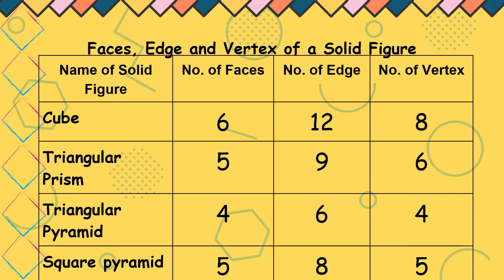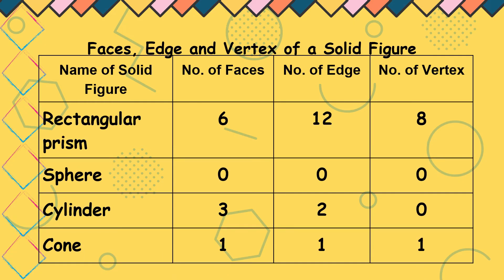Square pyramid, 5 faces, 8 edges, and 5 vertices. Next, rectangular prism has 6 faces, 12 edges, 8 vertices.